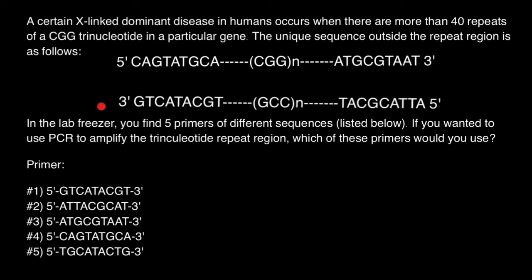That means, for example, if we consider one strand of the DNA, we cannot use it in one orientation, because the complementary strand would start with 3' and go in the 5' direction. So this is going to be the place where our first primer — which we call the forward primer — would go, and it's going to start with 5' and go in the 3' direction.